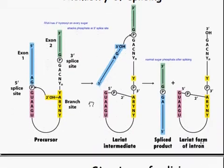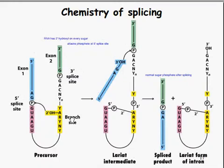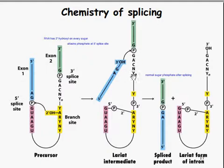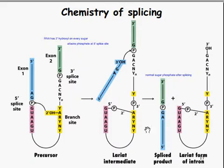The basic chemistry of splicing: the RNA has a 2' hydroxyl on every sugar. This 2' hydroxyl attacks the phosphate at the 5' splice site, which phosphorylates the 5' site and releases the exon end, so that the newly released 3' OH can attack and phosphorylate the other exon end at the lariat intermediate. This is a multi-step reaction — steps 1 and 2 result in the splice product and a lariat form of the intron.